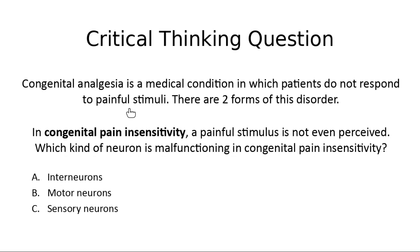There are two different forms of congenital analgesia. The first is called congenital pain insensitivity — where we don't even perceive a painful stimulus. If we're not perceiving a stimulus, which type of neuron might be giving a problem? The answer options are: interneurons, motor neurons, or sensory neurons.